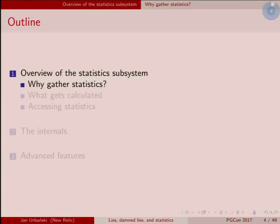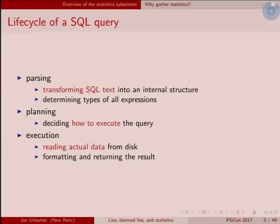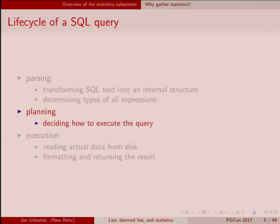Let's kick it off with why do we need to gather statistics. It's a database — we know it stores data and you can query it with SQL, but why do we need statistics? A SQL query gets executed in three steps: it gets parsed, it gets planned, and then it gets executed — where stuff gets read from disk and computed. Statistics are used in the second phase, which is planning. To figure out a good way to run a query, we need information about the data before we actually run it. The planning algorithm needs input, and the inputs come from the statistics subsystem.